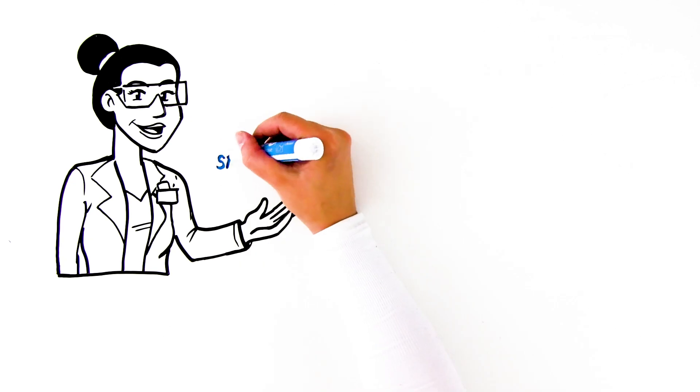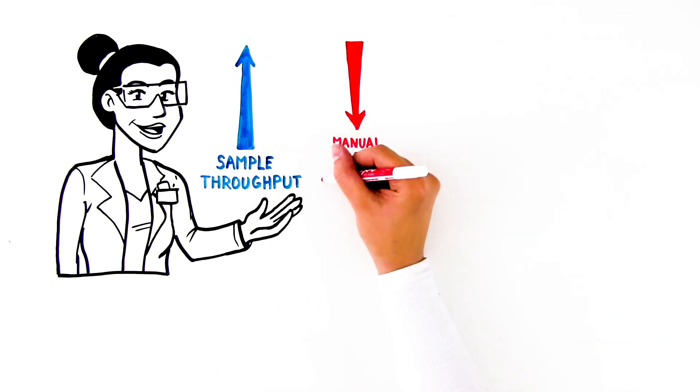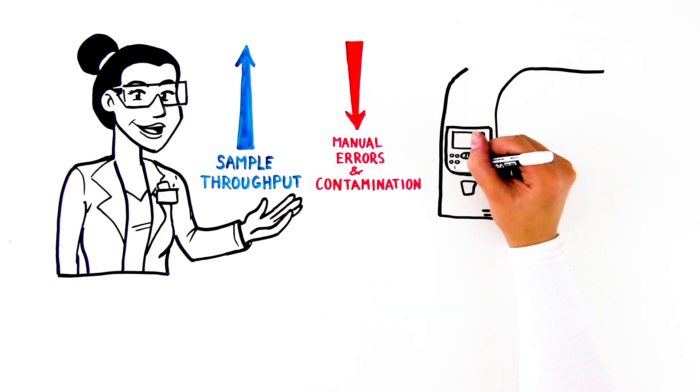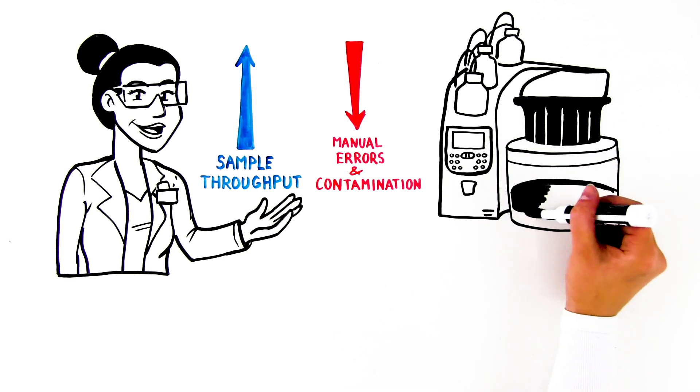Finally, it's challenging to increase sample throughput while reducing manual errors and sources of contamination. This can be addressed using automated solvent extraction, such as the ASE-350 or Xtreva.